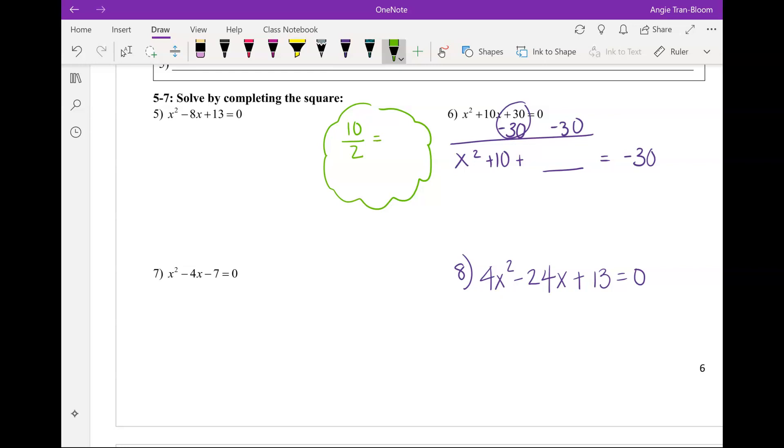Perfect. So, what's 10 divided by 2, Adam? 5. After you divide by 2, Adam, what do you do with that? You square it. Right. So, what's 5 squared, Adam? 25. Beautiful. What do we do with this value? Plug it in. One side, both sides, all sides? Both sides.